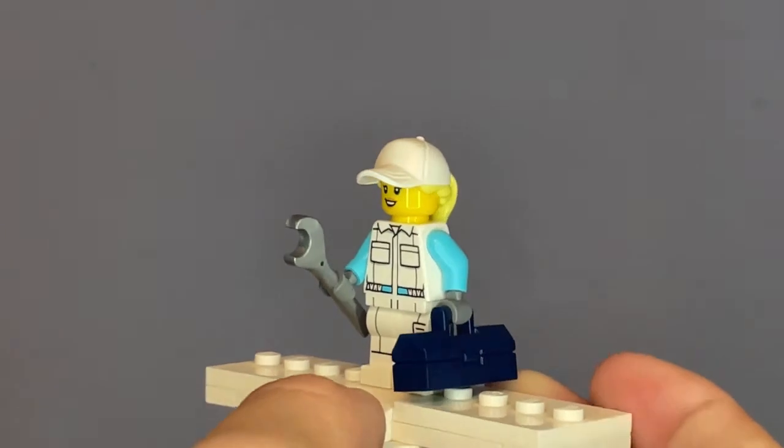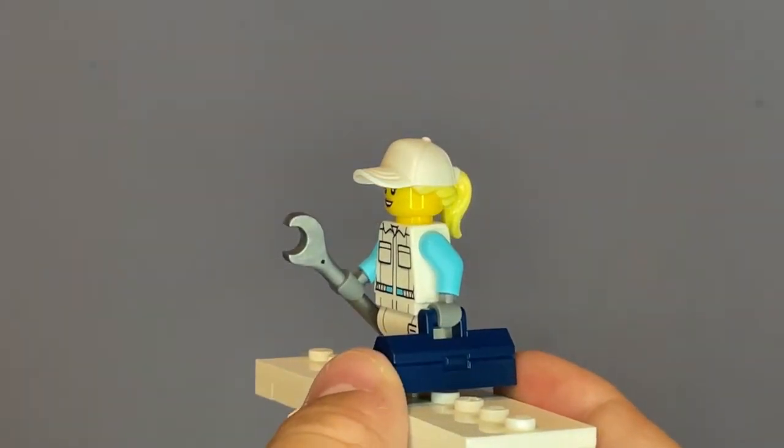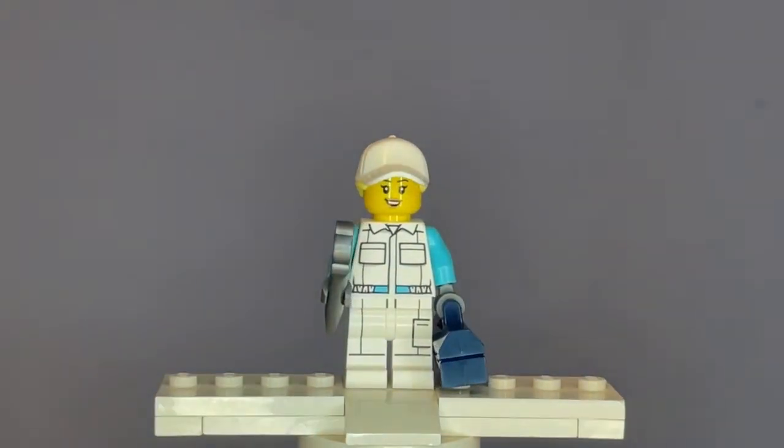In this set, for the accessory, she has a dark blue toolbox which sadly doesn't open up, and she also has a silver socket wrench.